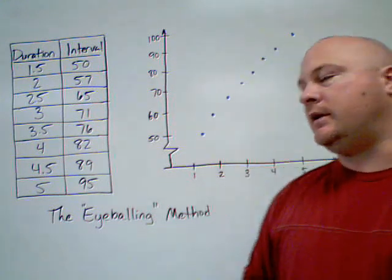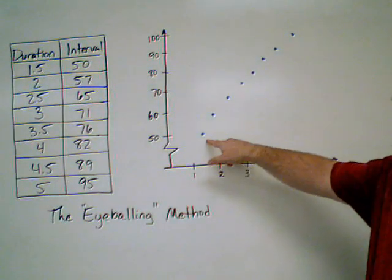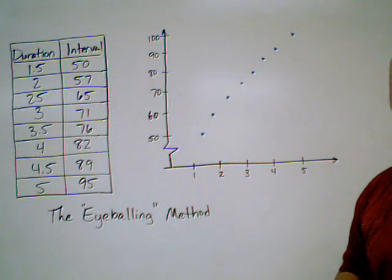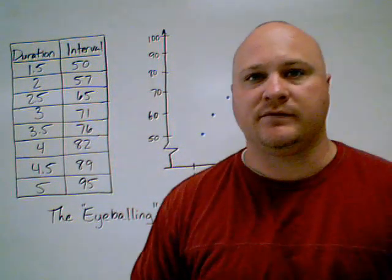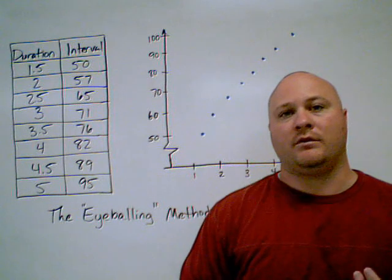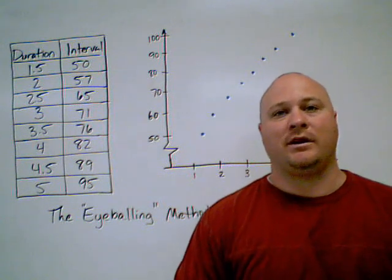The eyeballing method is used to plot points, and we're trying to sketch a line of best fit. Now the line of best fit is the one that we are going to guess is going to best describe what our data is doing.